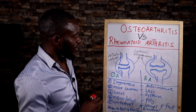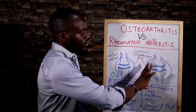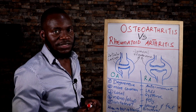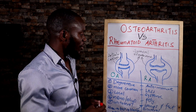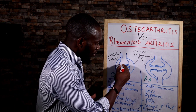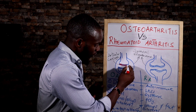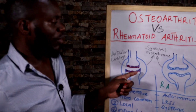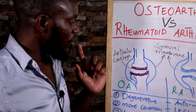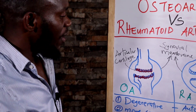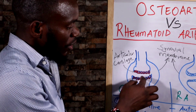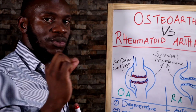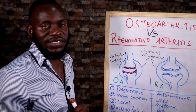For osteoarthritis, there is chemical breakdown of the articular cartilage — the cartilage that protects your bones from friction. It is destroyed by chemicals, trauma, or injury, exposing the bone to the adjacent bone. That friction is what causes pain and inflammation. That is osteoarthritis.